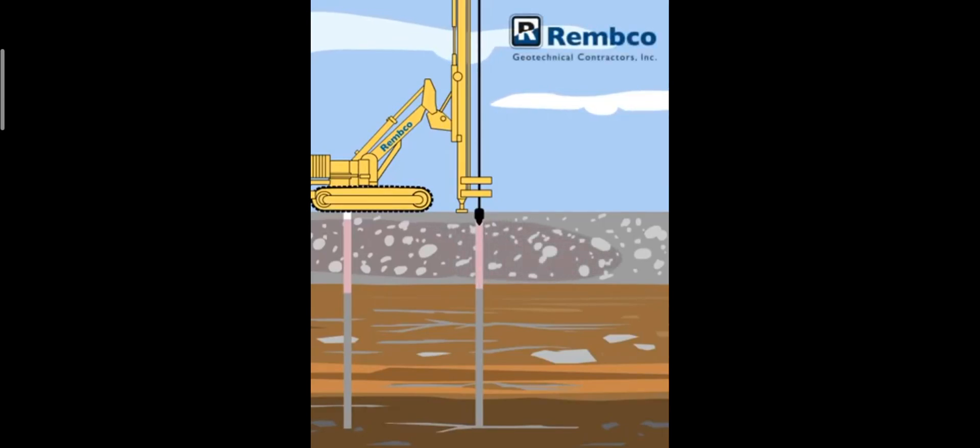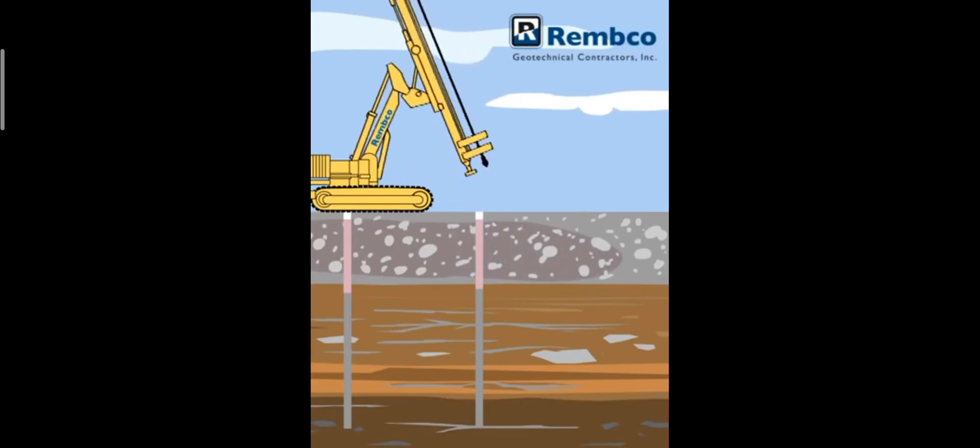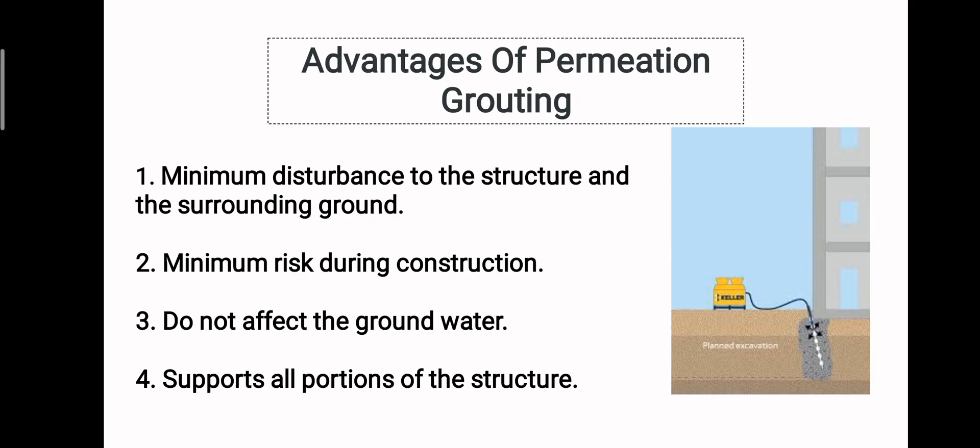Permeation grouting is used either to increase strength or strengthen the soil. Advantages of permeation grouting include: minimum disturbance to the structure and surrounding ground, minimum risk during construction, does not affect the groundwater, and supports all portions of the structure.